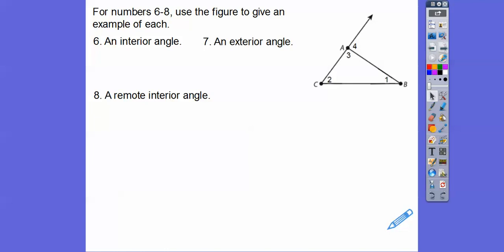For numbers 6 through 8, use the figure given. An interior angle are all of these inside angles 1, 2, and 3. This is an exterior angle, and these two are the remote interior angles. These two form a straight line, a linear pair. So the other two interior angles are called the remote interior angles.